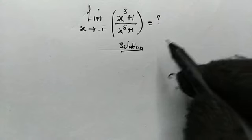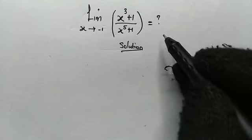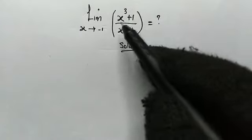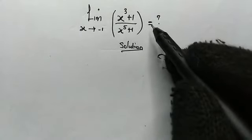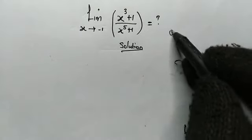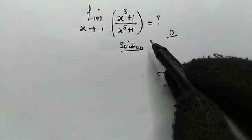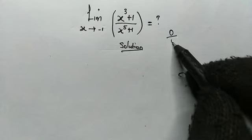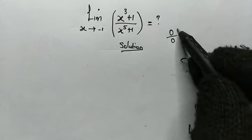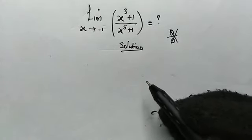When you try making a direct substitution here, we get negative 1 to the power of 3, which is negative 1, plus 1 gives us 0 in the numerator. Negative 1 to the power of 5 is negative 1, plus 1 gives us 0 in the denominator. We can see that this is in indeterminate form. So what should we do?